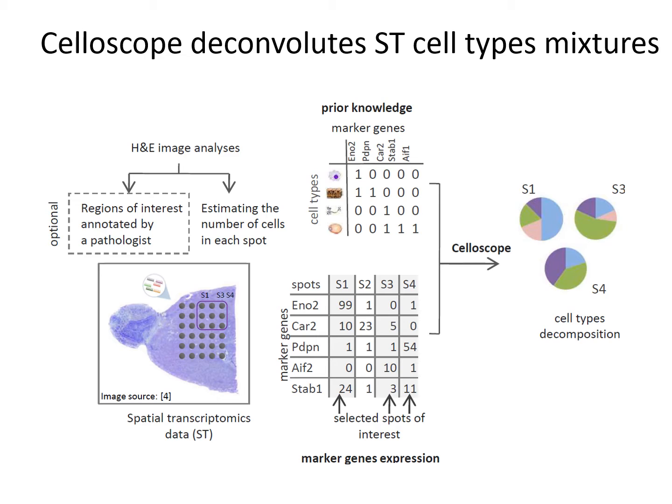The first step in the Celloscope pipeline is H&E image analysis. Regions of interest are annotated by a pathologist. Additionally, the number of cells in each spot is estimated. Prior knowledge on marker genes should be collected beforehand and summarized as a binary matrix. This prior knowledge on marker genes together with data on marker gene expression serve as the model's input, on which Celloscope is applied to provide estimates for the cell types' proportions across spots.